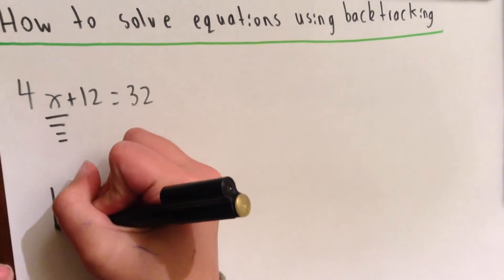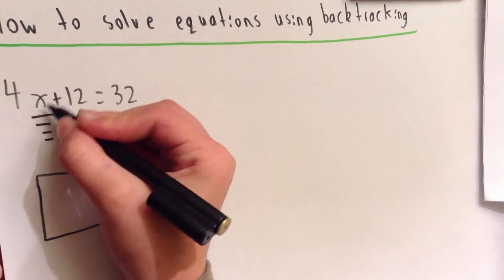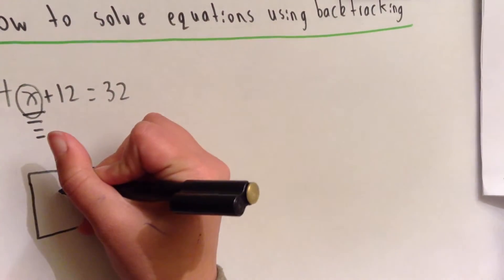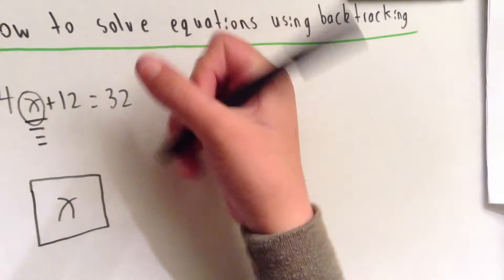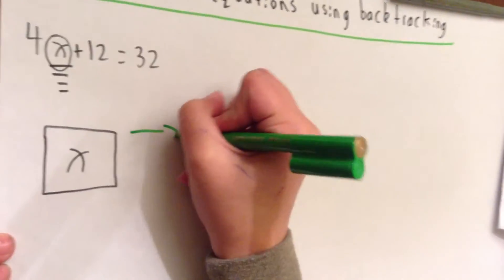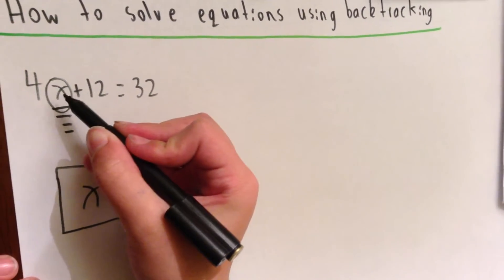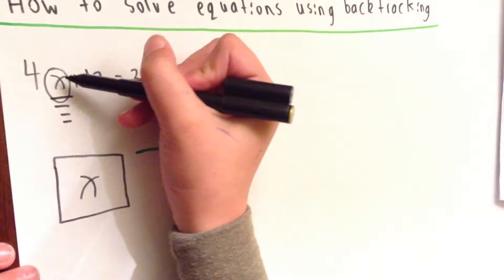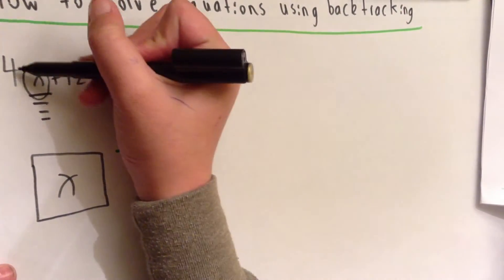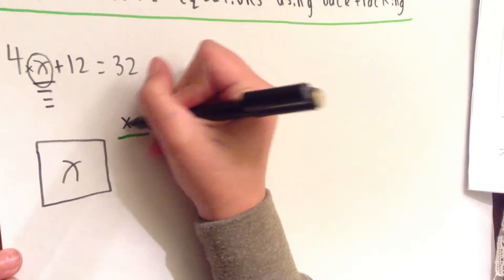First, we draw one box and we draw what we're starting off with, which is called the input number because we're starting off with it. So we draw x, and now we draw an arrow. Now, what do we do with this arrow? We look at the first operation being done to the x. So what's the first operation? The 4. Whenever there's no operation sign, it's always a times sign. So we times it by 4.